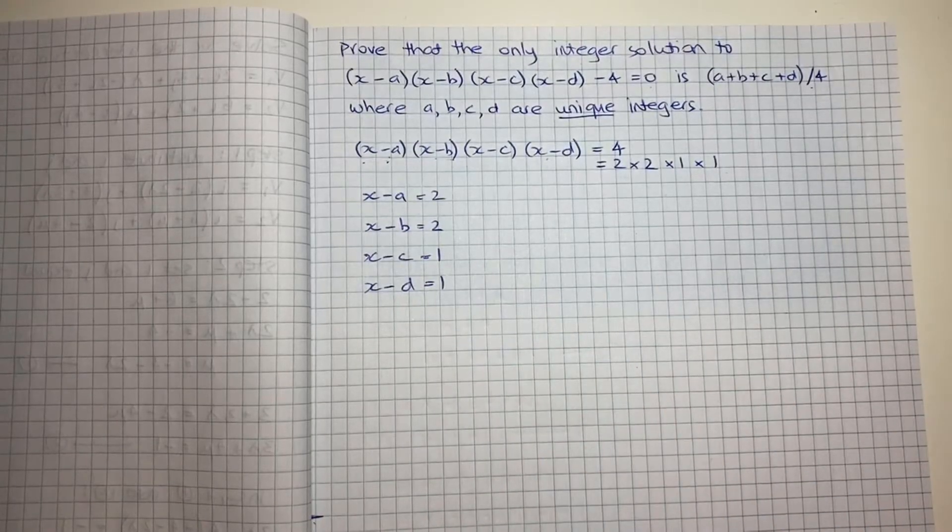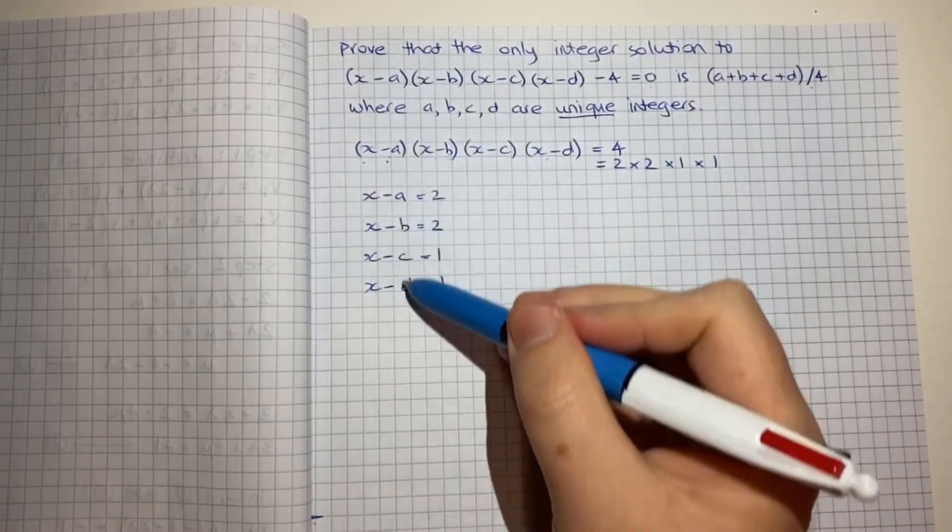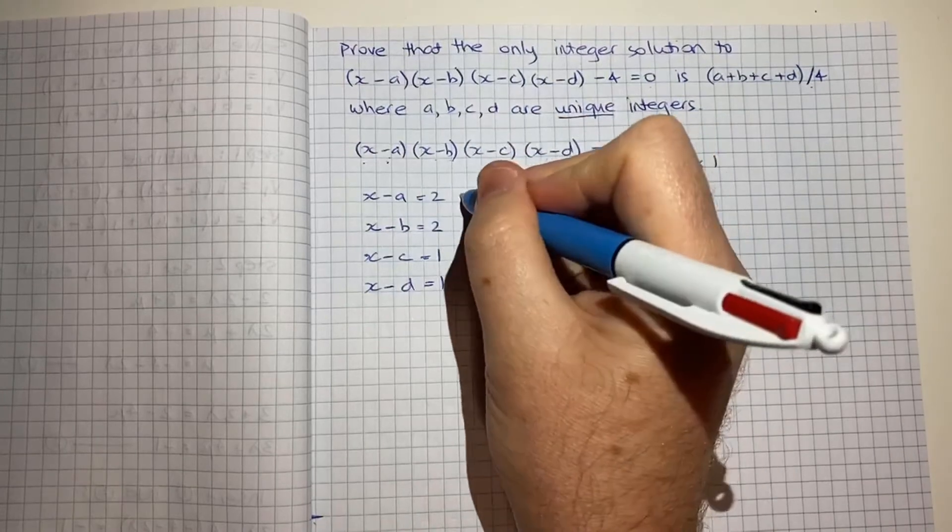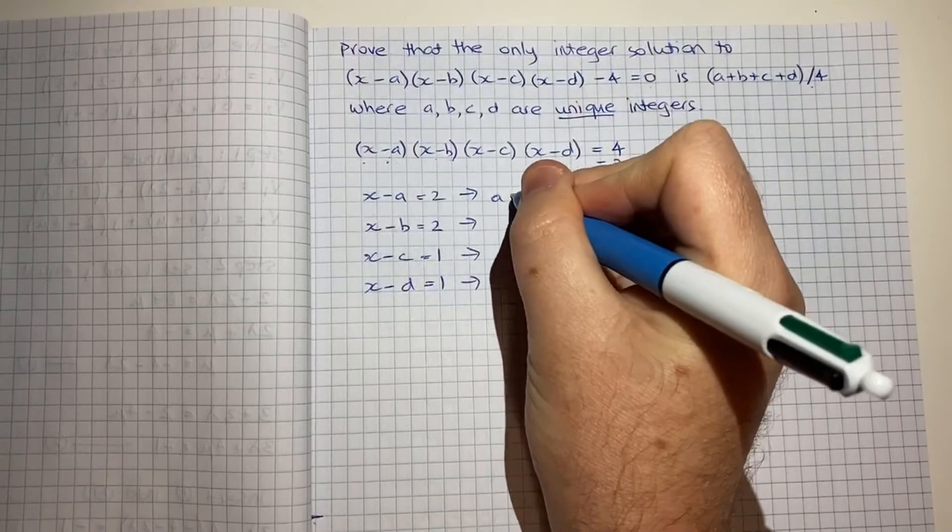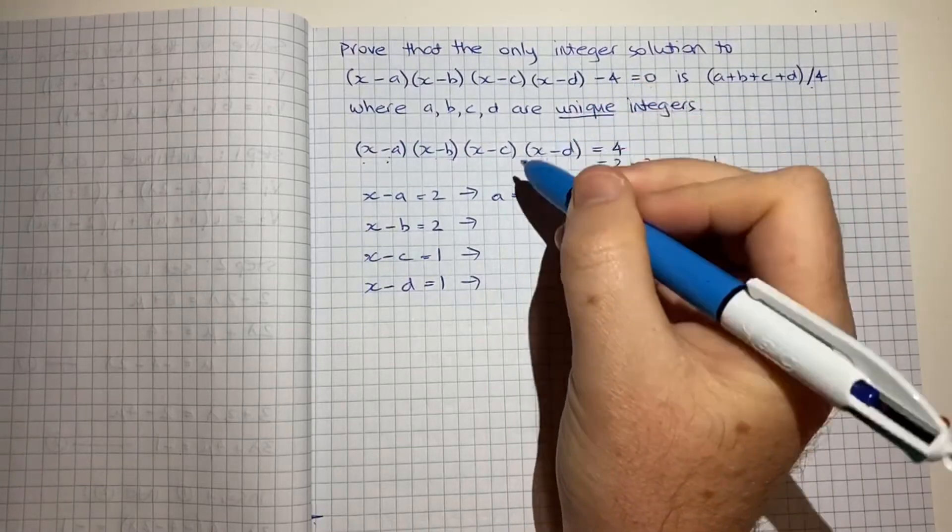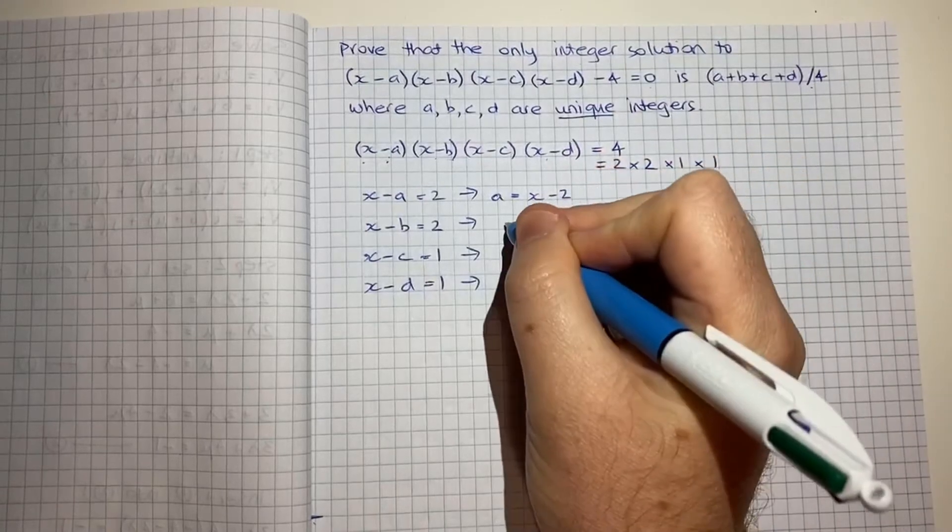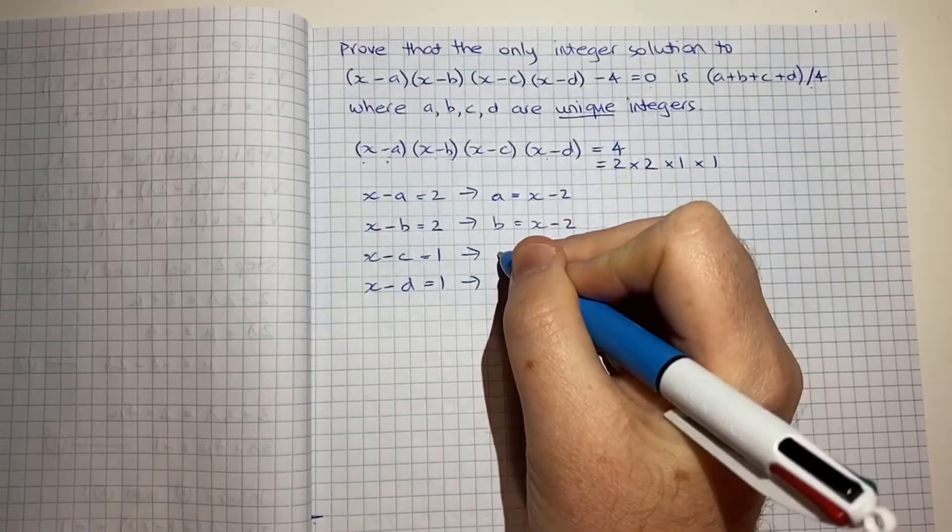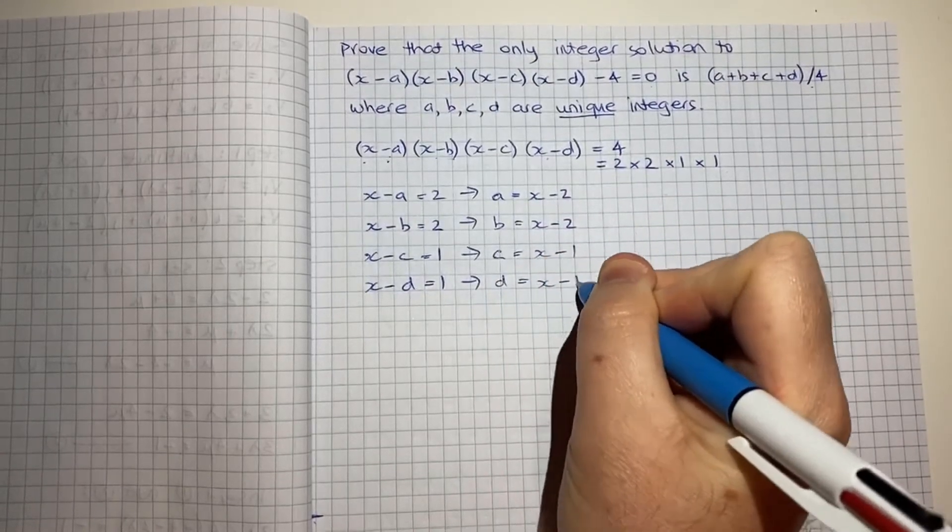And you could then do some rearranging to have a, b, c and d as the main items. So we'd get a = x-2, b = x-2, c = x-1 and d = x-1.